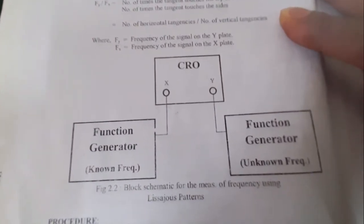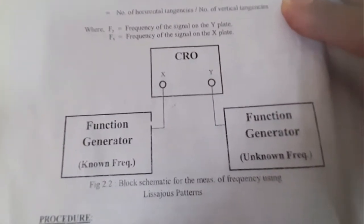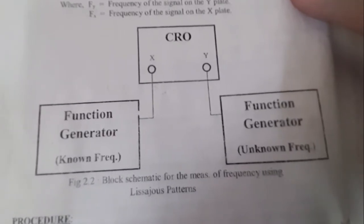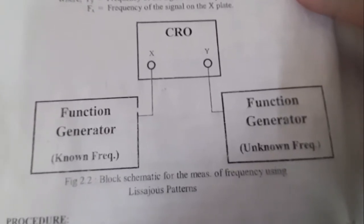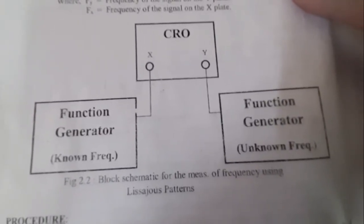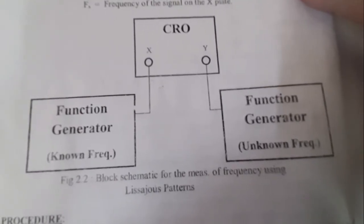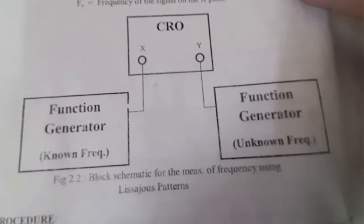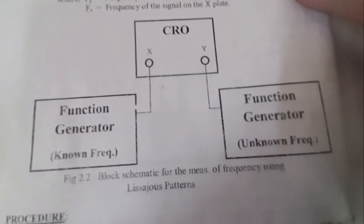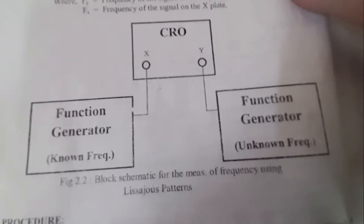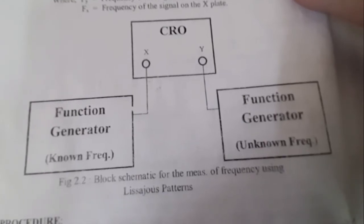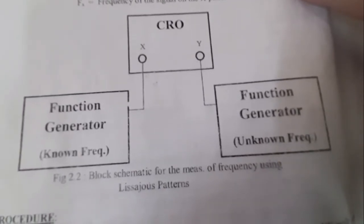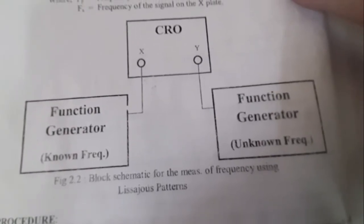Today we are starting with the measurement of frequency with the help of the Lissajous pattern. The required instruments are two function generators. The first function generator is used as a known frequency source, which serves as a reference source for comparison purposes. The second function generator is used as an unknown frequency source whose frequency we want to measure.